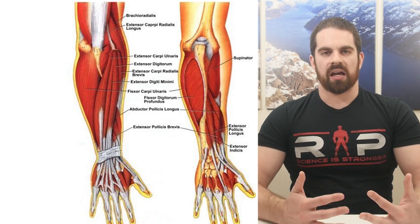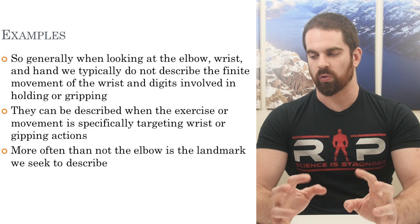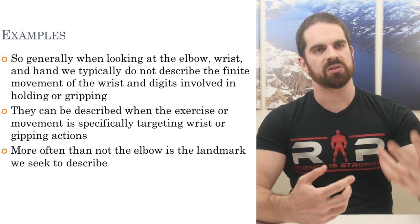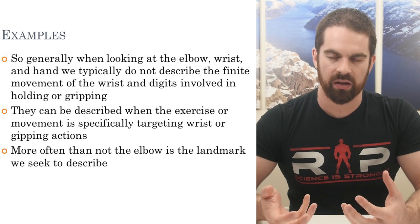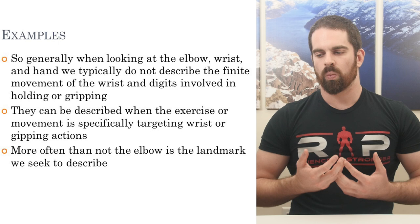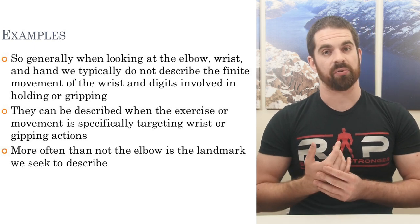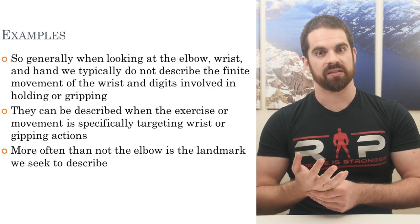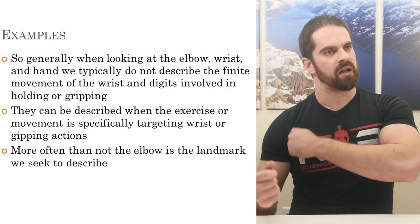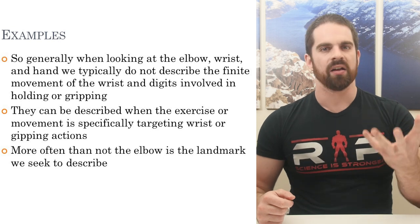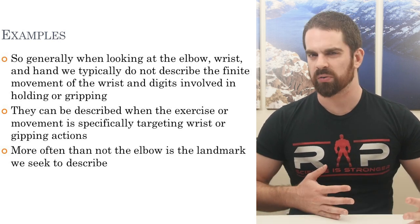When describing elbow, wrist, and hand movements in sport or exercise, we generally don't describe finite movements like gripping — we assume things like finger and wrist flexion if someone is gripping something. Usually when describing sporting or exercise movements, we're primarily talking about the elbow. There are specific examples where we'd directly describe wrist or finger extension or flexion, but for gross movements like throwing a ball or hitting a tennis racket, some of those finite movements are assumed.